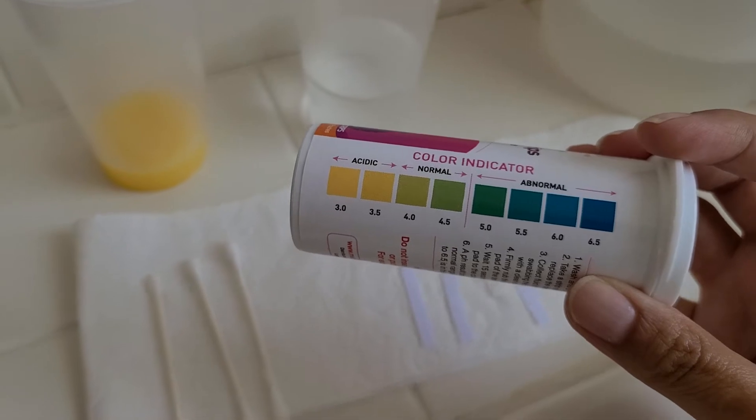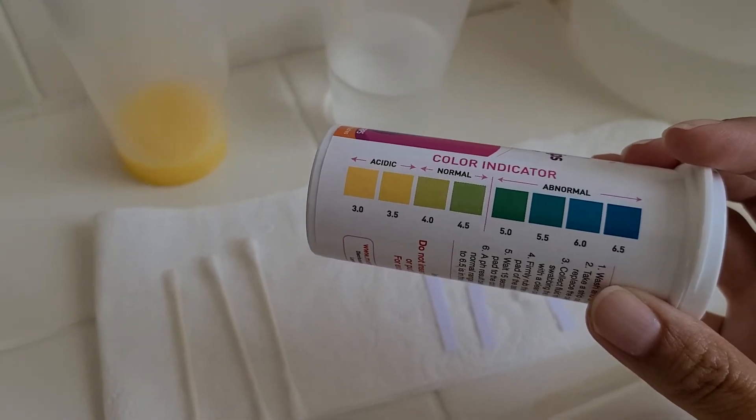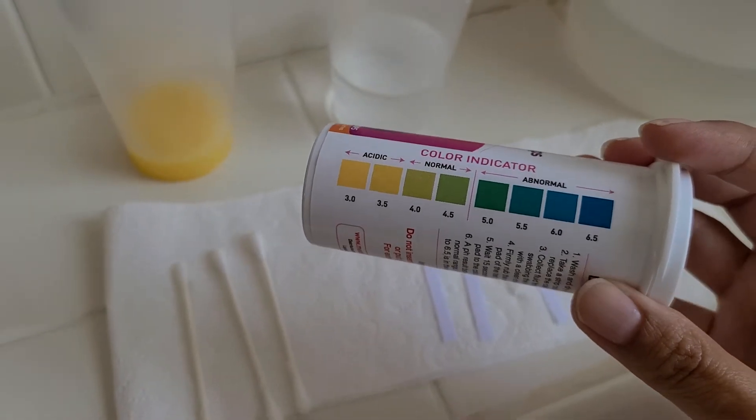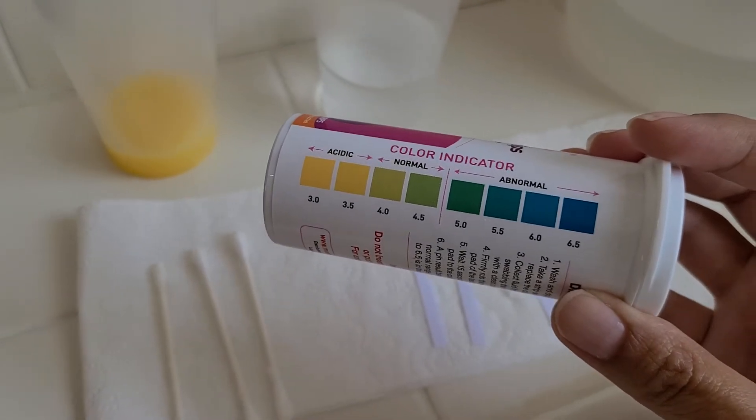Less than that is considered acidic but still normal. You could have a vaginal pH in the 3.5 range and it's still considered normal, but it's kind of rare to have it be that acidic.